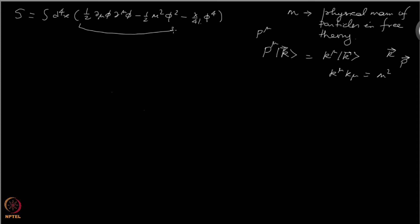Just because we have another term in the action, this argument breaks down. You cannot conclude that m is the mass of physical particles in the interacting theory. You have to similarly construct states, find the dispersion relation, and only then can you say what is the mass of the particles in that theory. The moment you add interactions, the parameter m no longer remains the physical mass. We will unfortunately not have time to find the physical mass carefully in this course — I will do it in the second part of the quantum field theory course.